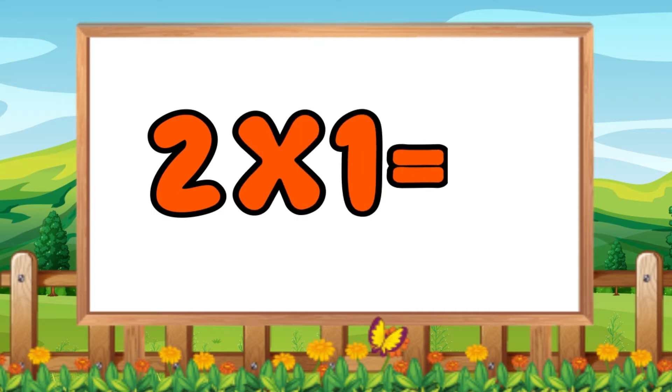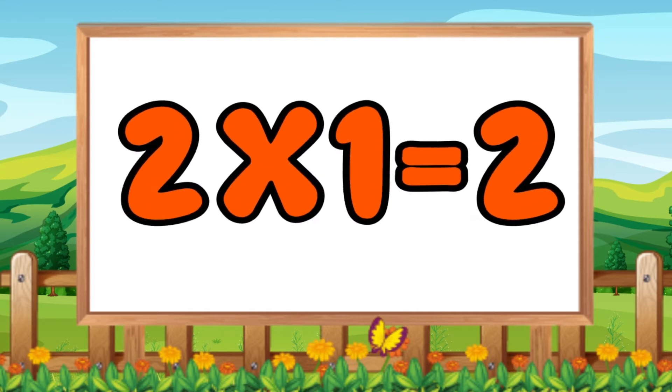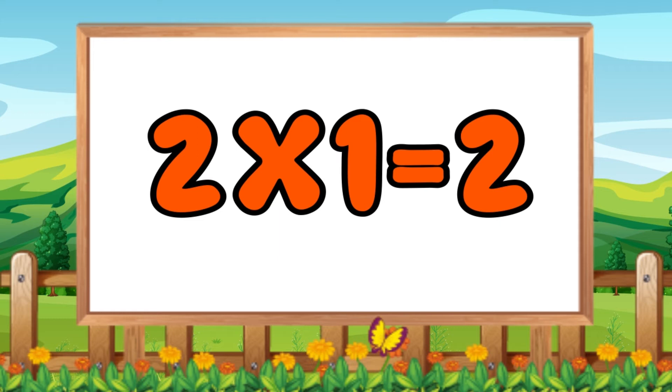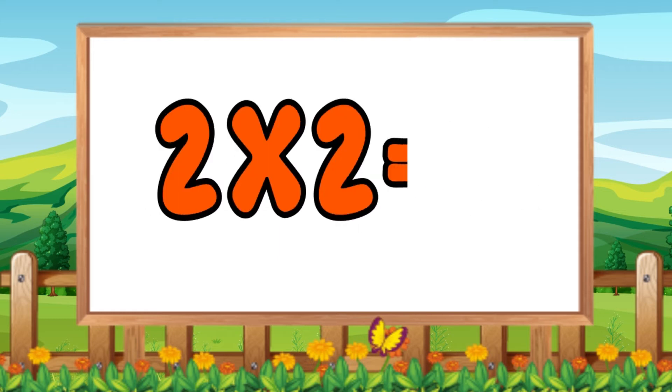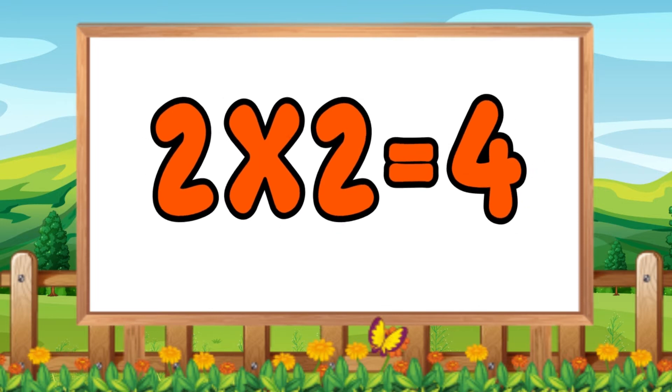Two ones are two, two ones are two. Two twos are four, two twos are four.